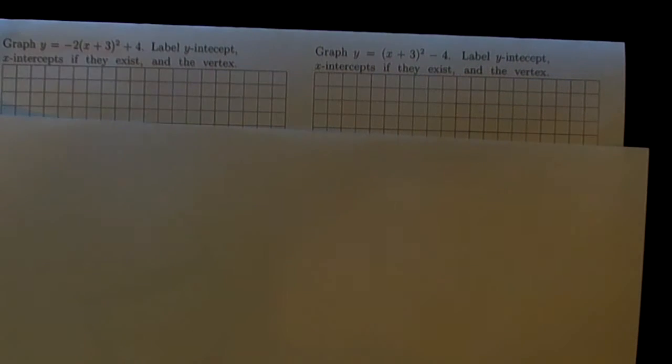When we're done, we're supposed to label the y-intercepts, the x-intercepts if there are any, and where the vertex is. We're supposed to fit all that onto this piece of graph paper.